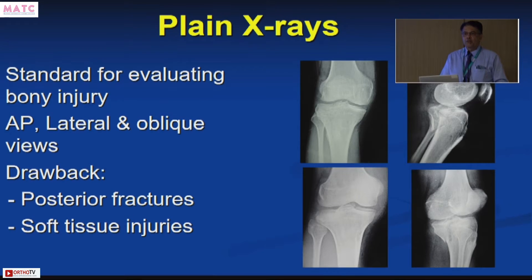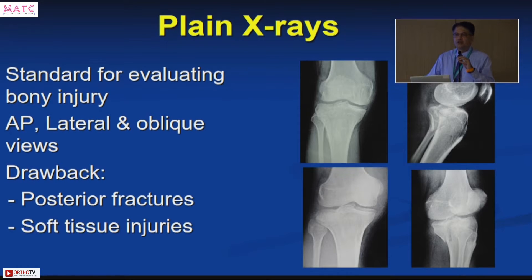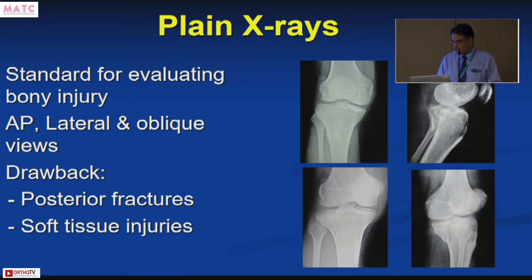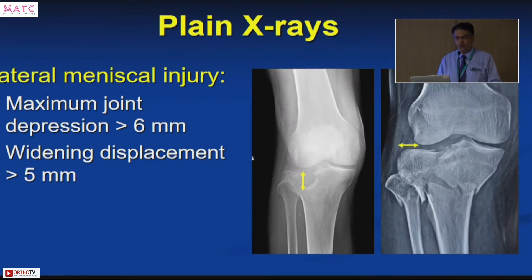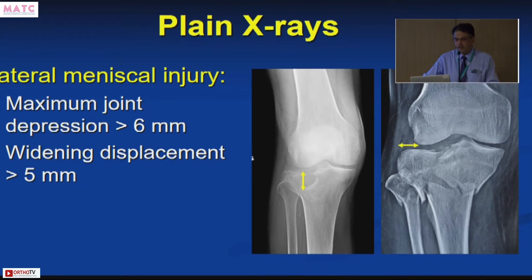The radiological assessment has also changed. We were initially depending only on plain X-rays — AP, lateral, or oblique. The drawback of plain X-rays was difficulty assessing involvement of the posterior aspect of the tibia and soft tissue injuries such as ligaments or menisci. Some pointers on plain X-rays — joint depression more than 6 mm or condylar widening more than 5 mm — suggest lateral meniscal injury, but the extent cannot be assessed.